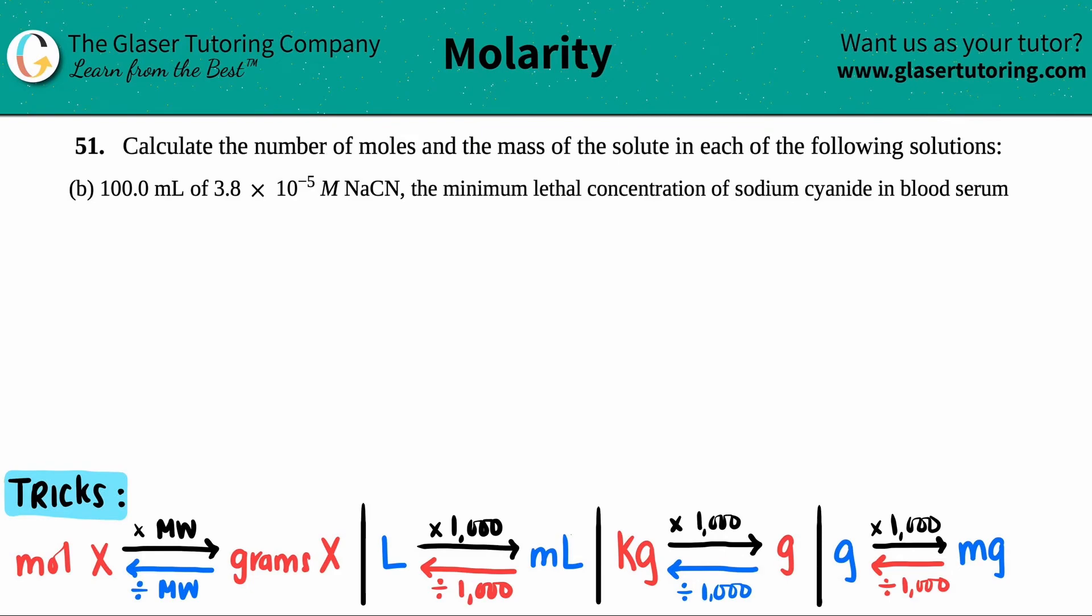Number 51, calculate the number of moles and the mass of the solute in each of the following solutions. And then we have letter B. So in this case, they tell us that we have 100 milliliters of a 3.8 times 10 to the negative fifth molar sodium cyanide compound. And this amount, this is the minimum lethal concentration of sodium cyanide in blood serum.